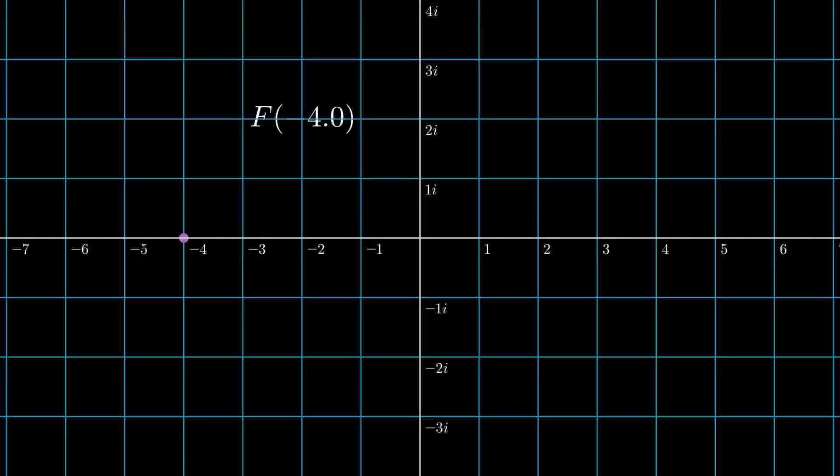Now this function behaves like any other function we have encountered before. It takes an input which is represented by the pink dot in this case and puts out a different output. But for the output of this function we have to expand to the complex plane. And even with this added complex plane the function behaves the same. It takes a number as an input and puts out another number as an output.